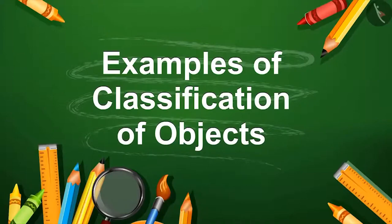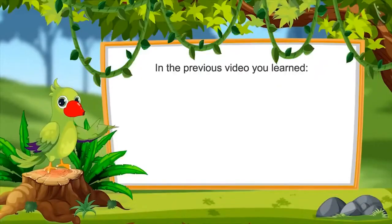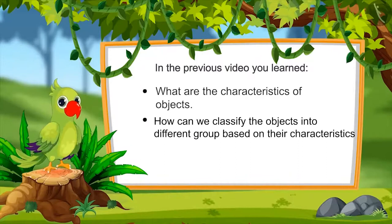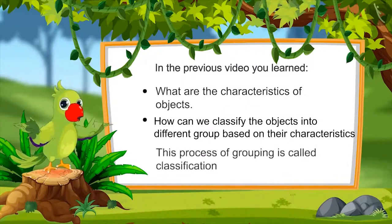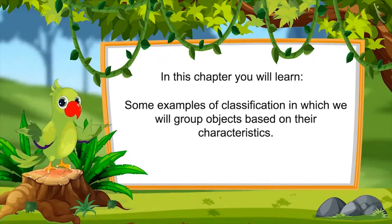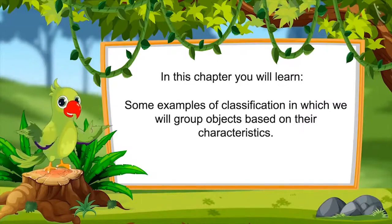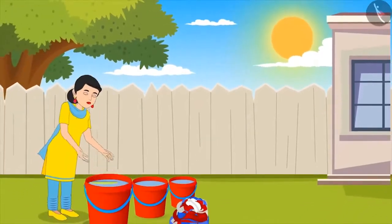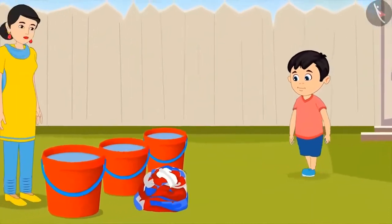So children, in the previous video, you have learned what are the characteristics of objects. On the basis of characteristics, how we can classify the objects and make different groups of them. You also learned that this process of grouping based on characteristics is called classification. In this video, we will see some examples of classification in which we will group objects based on their characteristics. It is morning and Chotu's mother is soaking clothes. Chotu comes to help his mother.